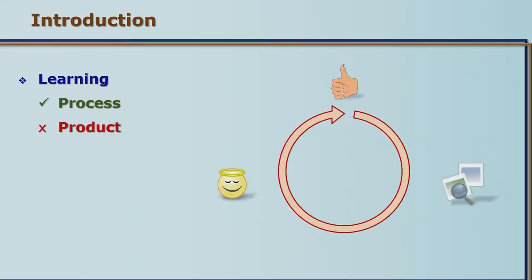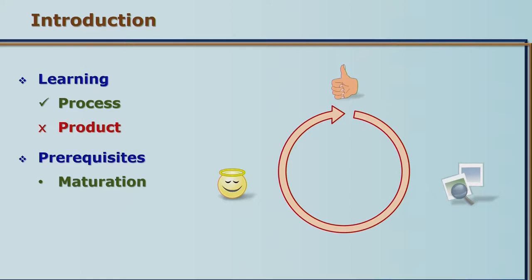Learning involves many things to keep us going towards reaching the goal — we call them prerequisites of learning. Among these is maturation, which comes first, without which we cannot learn. It brings readiness for learning and also sets the limits for learning. Genetic constraints will always be there; heredity decides how much we learn, while the environment gives us opportunities. Natural growth and development decides at what age we should learn what.